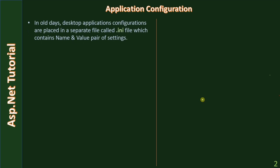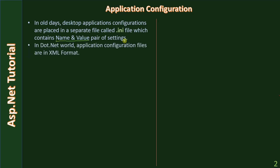In old days, desktop application configurations are placed in a separate file called INI, which contains name-value pair of settings. This is the approach we used in the 90s as well as the 2000s. In .NET, application configuration files are in XML format.